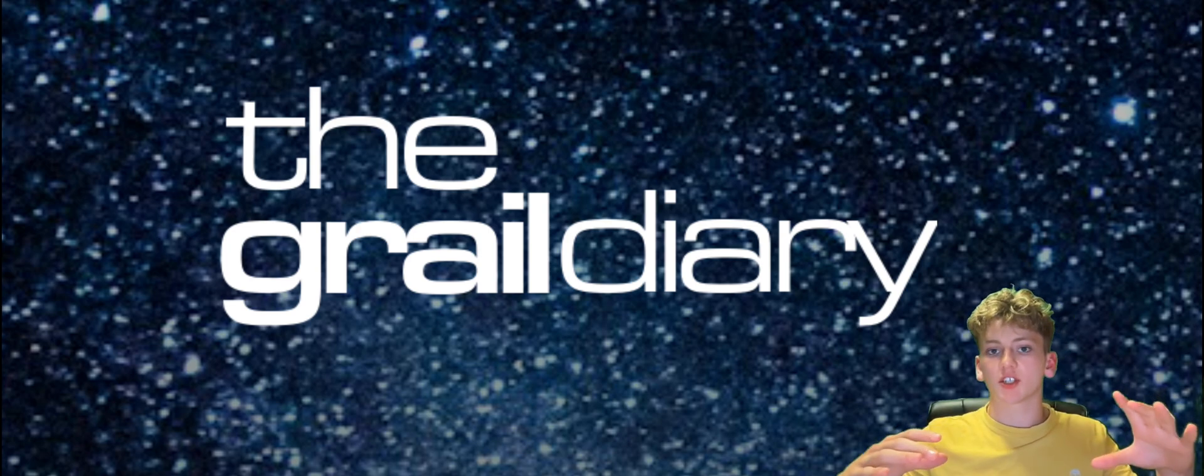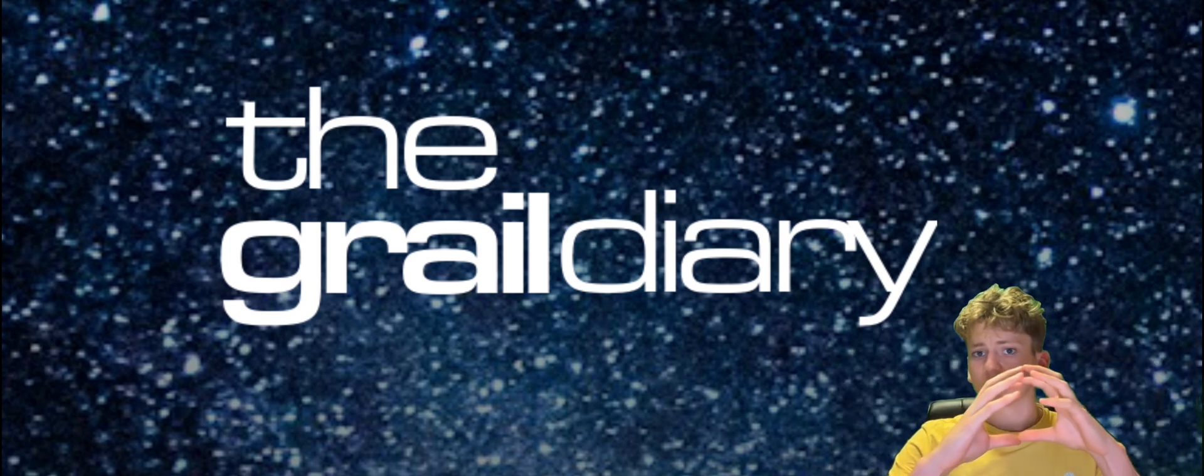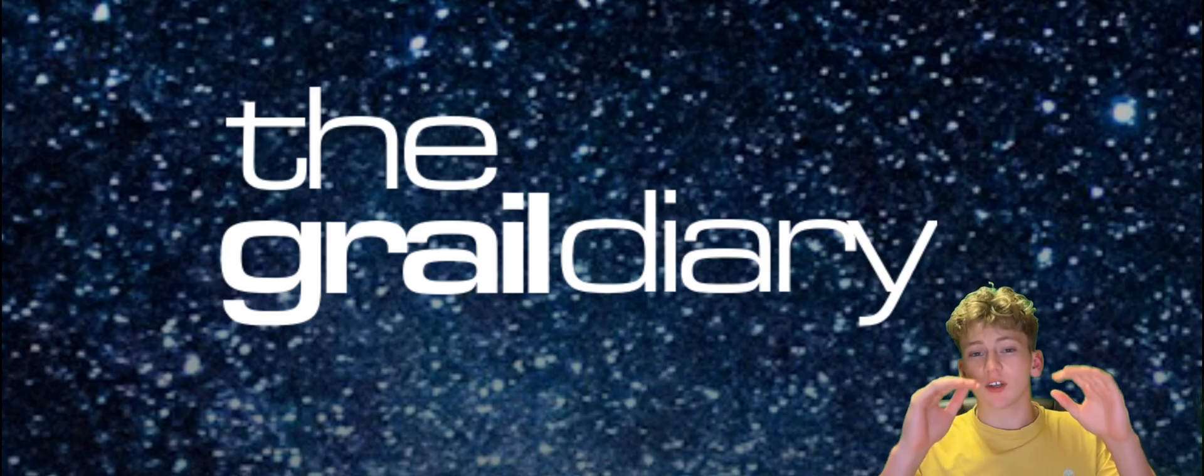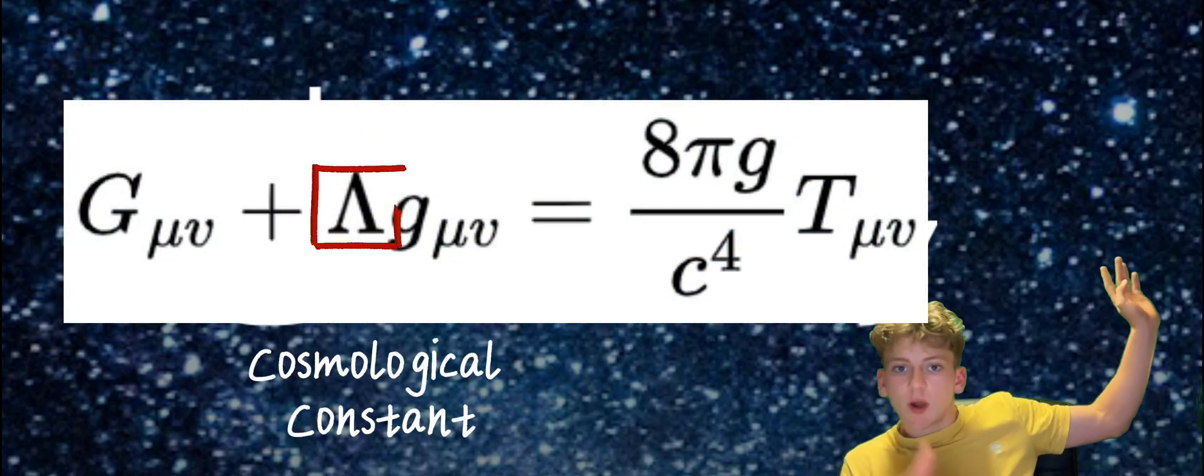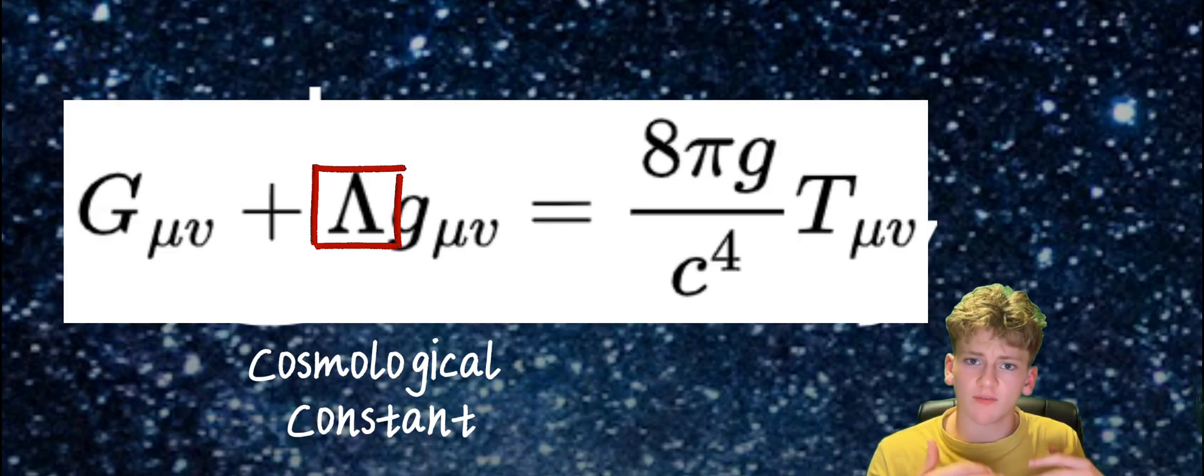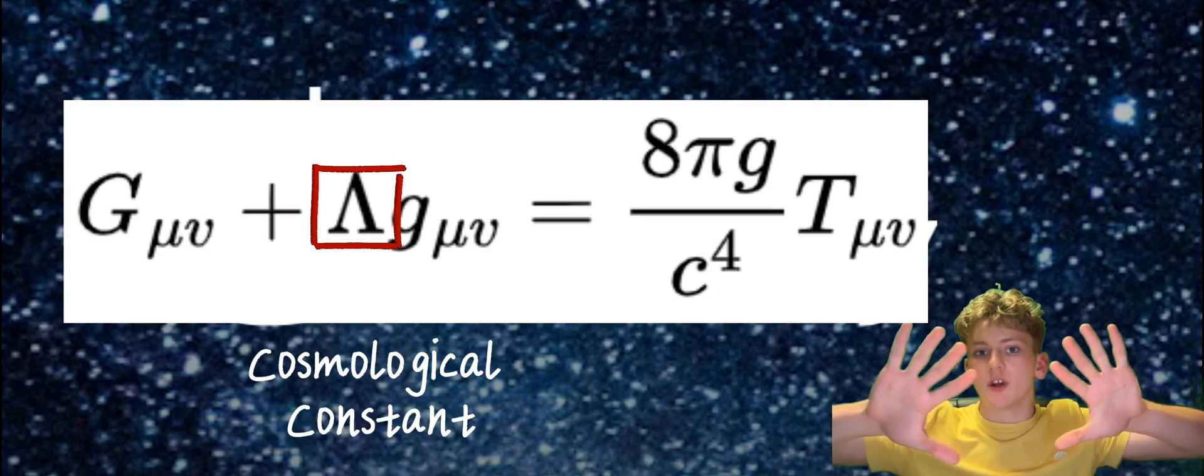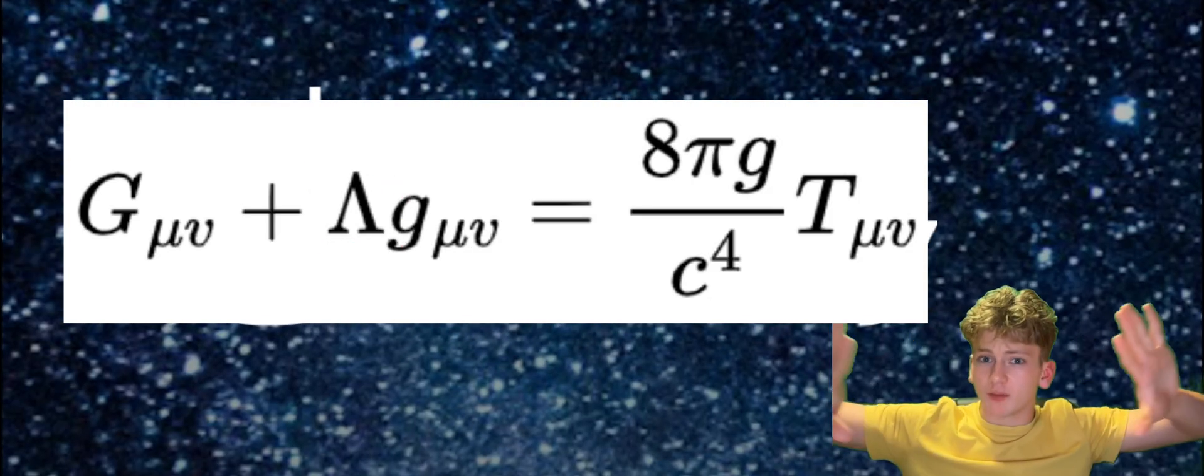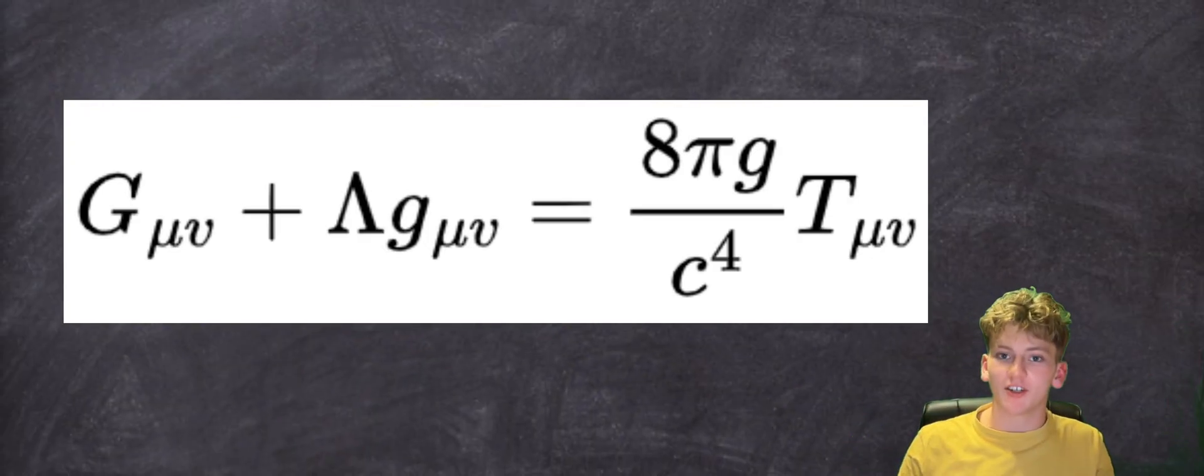To Einstein, the universe was static. It neither expanded nor contracted. It remained the same size. To account for this, he included the cosmological constant within his equations, and by fine-tuning the value of lambda, that's the symbol for it, he could produce a static universe. He balanced the inward pull of gravity with the outward pushing power of the cosmological constant to produce a static, unchanging universe.